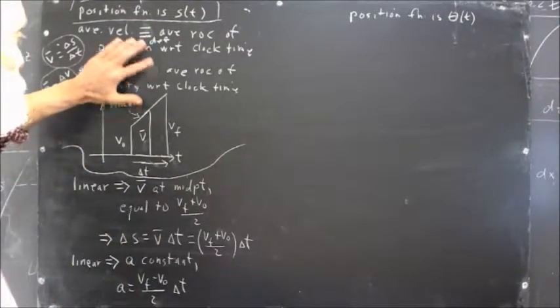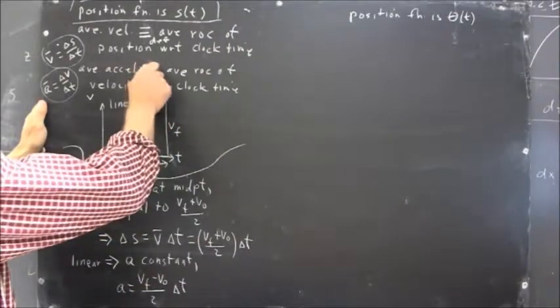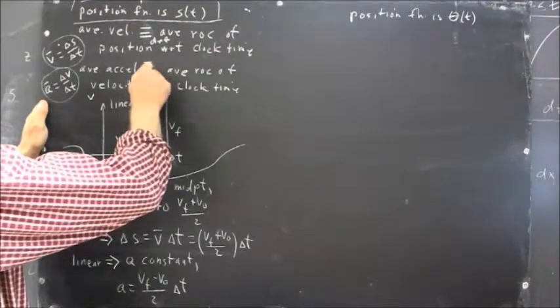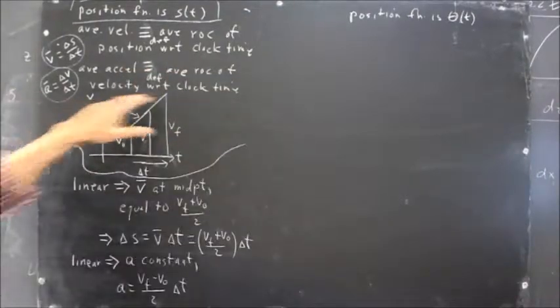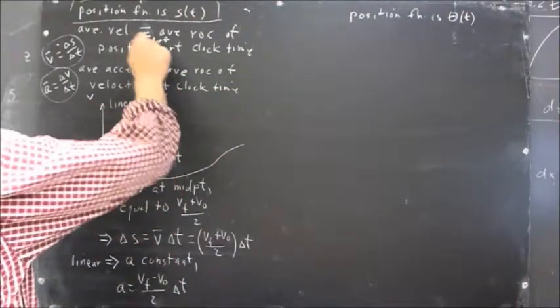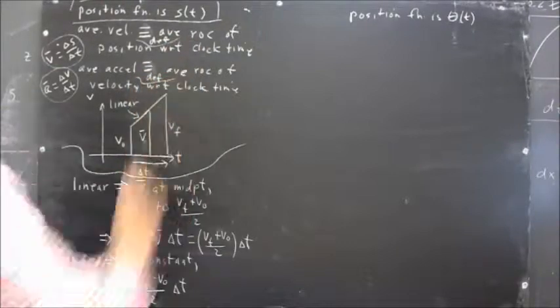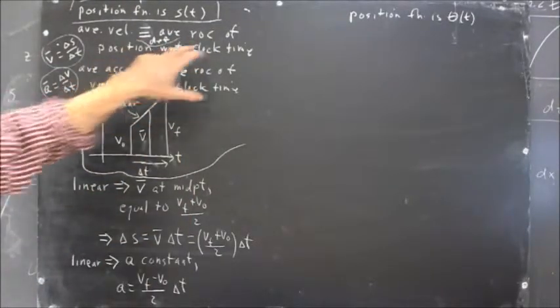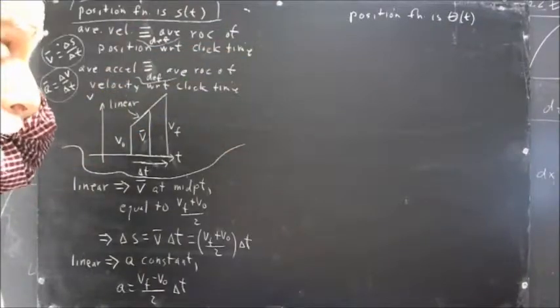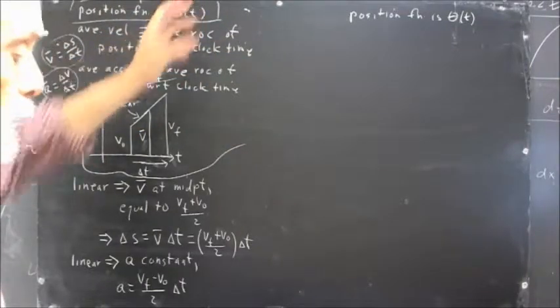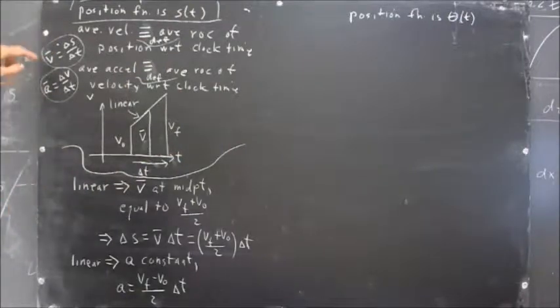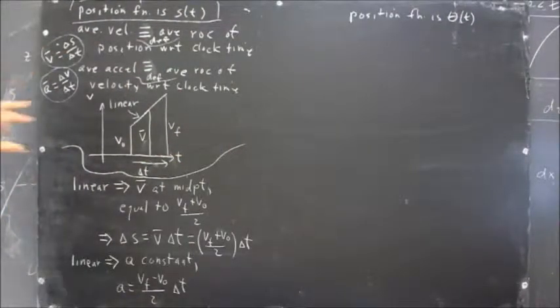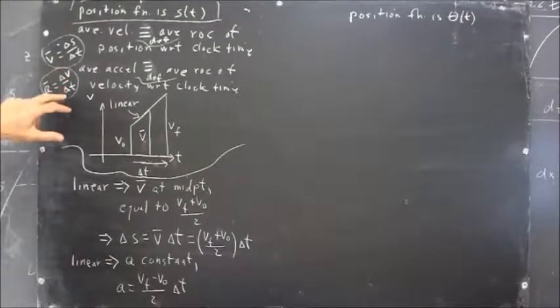Average acceleration equals, by definition, the average rate of change of velocity with respect to clock time. And the definition of average rate of change of one quantity with respect to another is the change in one quantity divided by the change in the other. Which leads us to average velocity is delta S over delta T. Average acceleration is delta V over delta T.